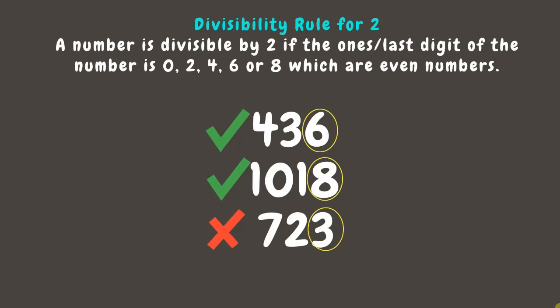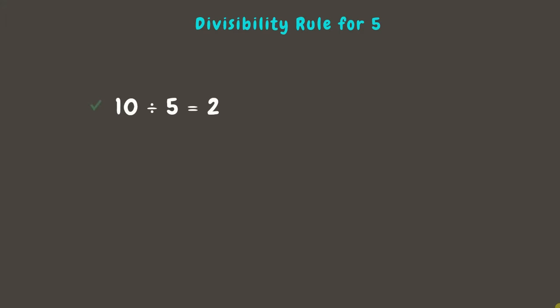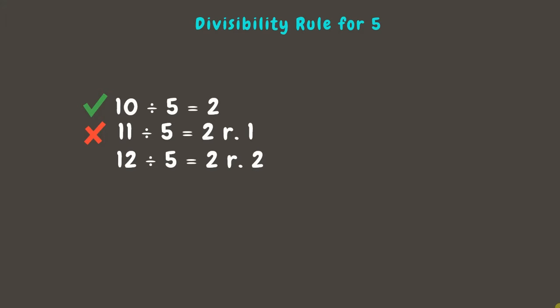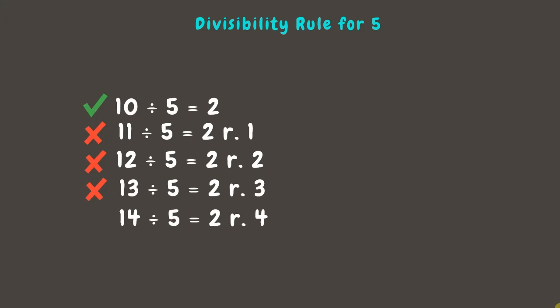Now let's learn the divisibility rule for 5. Dividing numbers 10 through 19: 10 divided by 5 is 2 — divisible. 11 divided by 5 is 2 remainder 1 — not divisible. 12 divided by 5 is 2 remainder 2 — not divisible. 13 has a remainder — not divisible. 14 divided by 5 is 2 remainder 4 — not divisible. 15 divided by 5 is exactly 3 — divisible. 16 divided by 5 is 3 remainder 1 — not divisible.